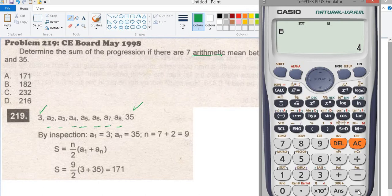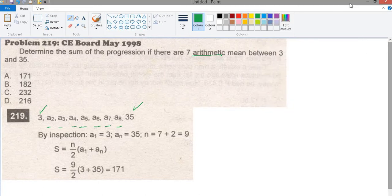The common difference is 4. Since we already know the common difference is 4, we can use the calculator technique for the sum.